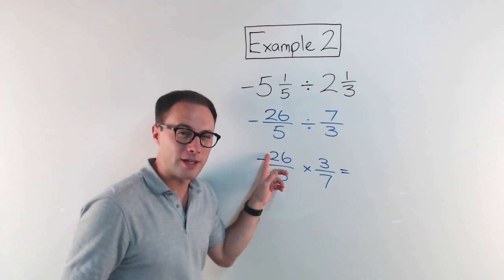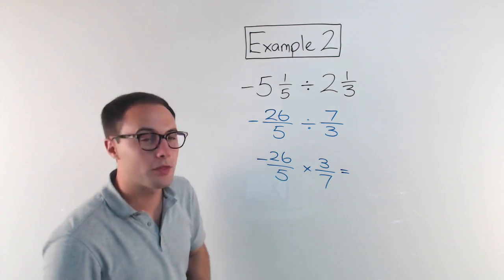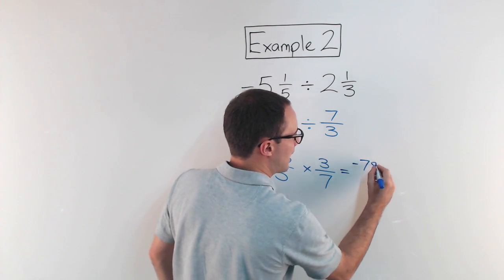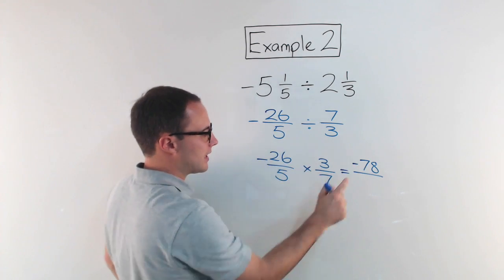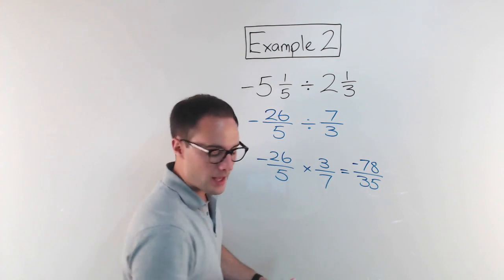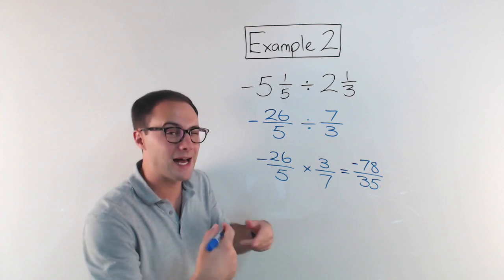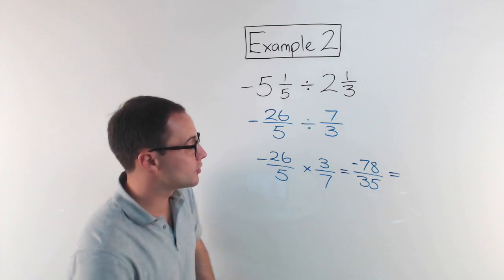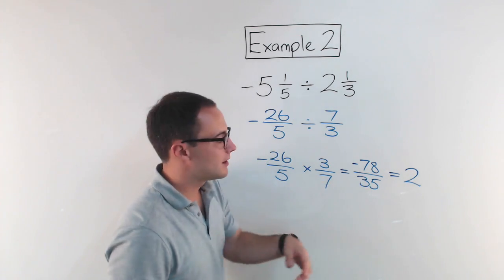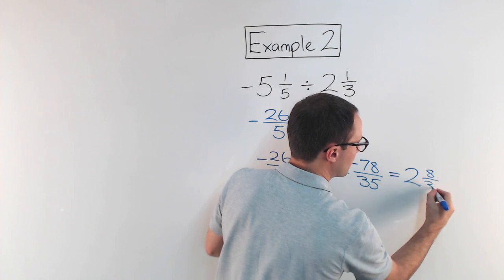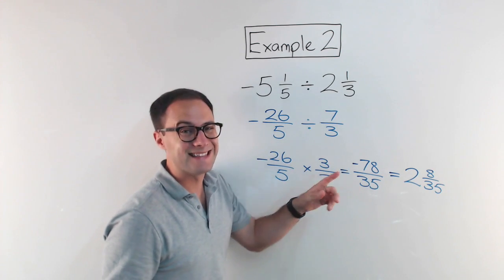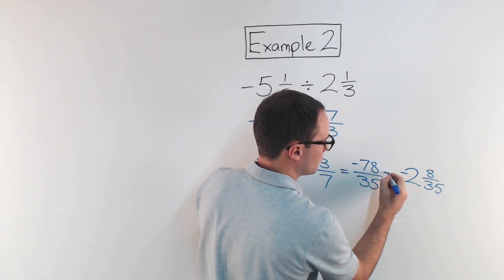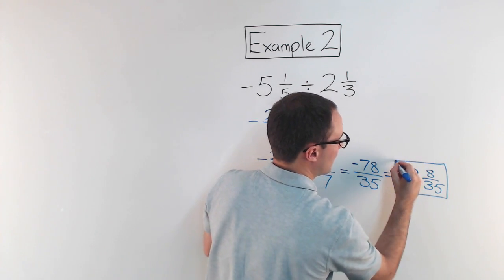I'll keep the negative with the twenty-six, so negative twenty-six times three: three times twenty is sixty, plus three times six is eighteen, giving negative seventy-eight. Negative times positive is negative. Five times seven is thirty-five. This is an improper fraction, so my last step is to change it back to a mixed number. Thirty-five into seventy-eight goes two whole times — that gives seventy — with eight left over. The answer is negative two and eight thirty-fifths.